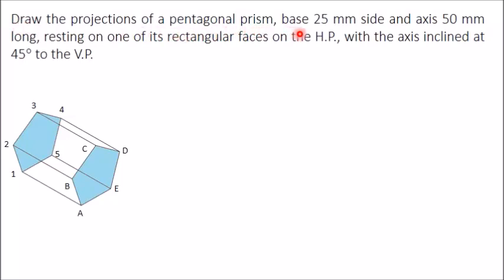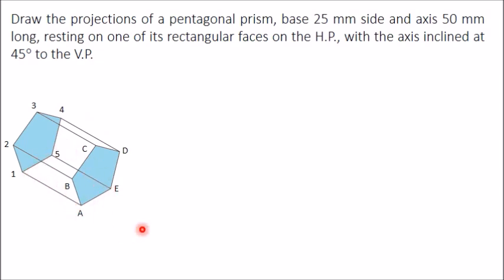Draw the projections of a pentagonal prism with base 25 mm side and axis 50 mm long, resting on one of its rectangular faces on the HP with the axis inclined at 45 degrees to the VP. In a pentagonal prism there are two bases, both pentagonal in shape. The side of this pentagon is 25 mm and the axis (length) is 50 mm. The prism rests on one of its rectangular faces on the HP.